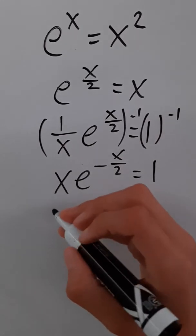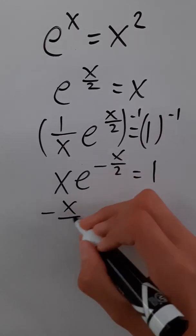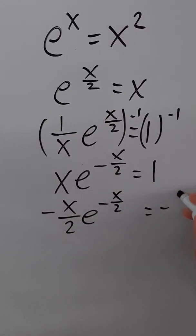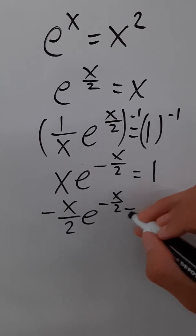And now let's multiply both sides by negative one half. So we get negative x over two e to the negative x over two is equal to negative one half.